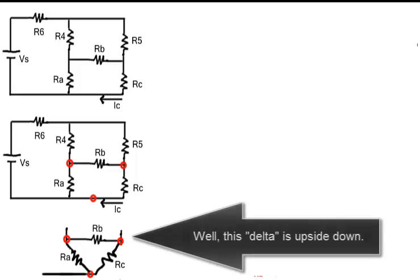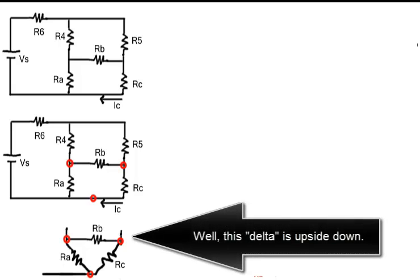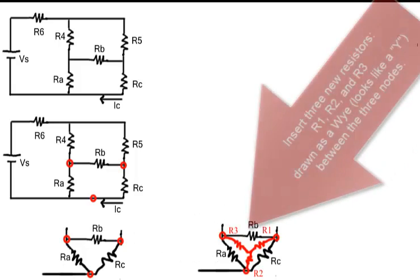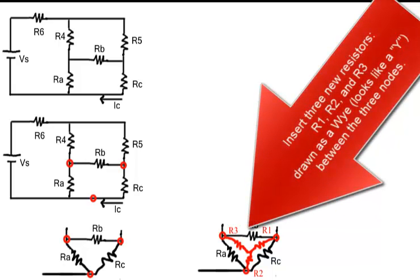Well, this Delta is upside down. Insert three new red resistors, R1, 2, and 3, drawn as a Y configuration between the three nodes.